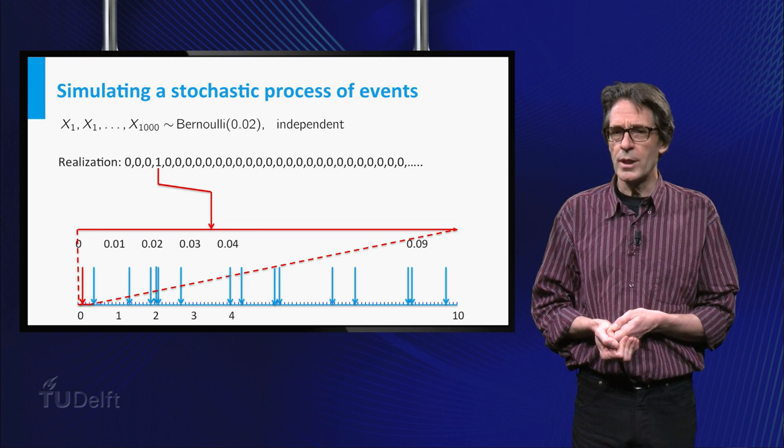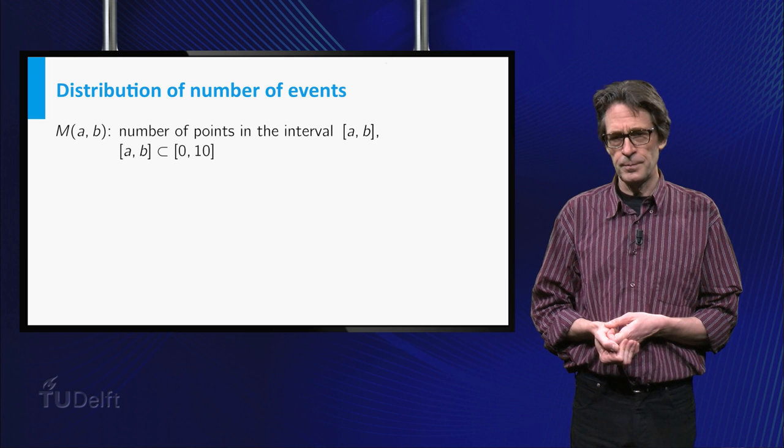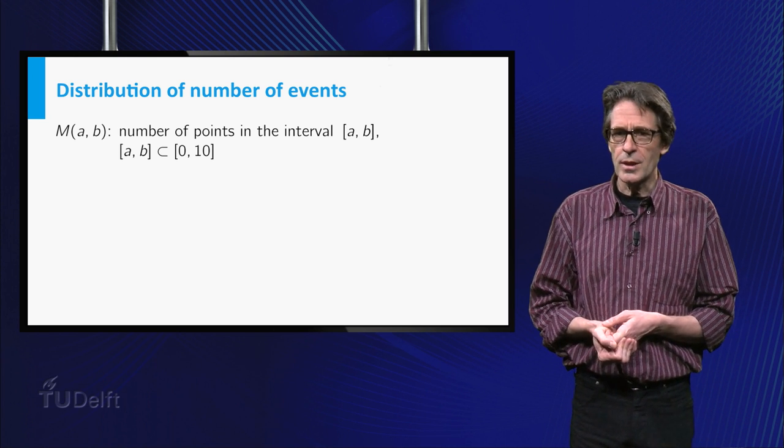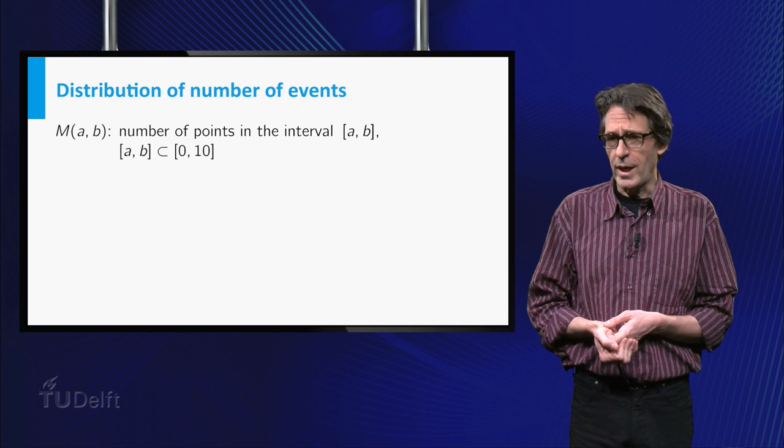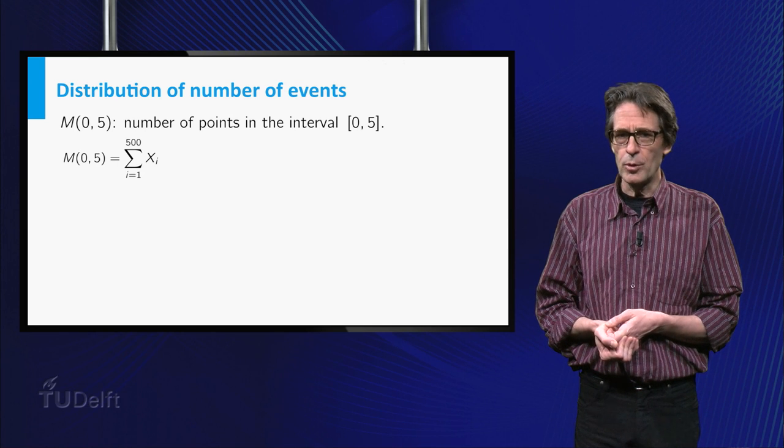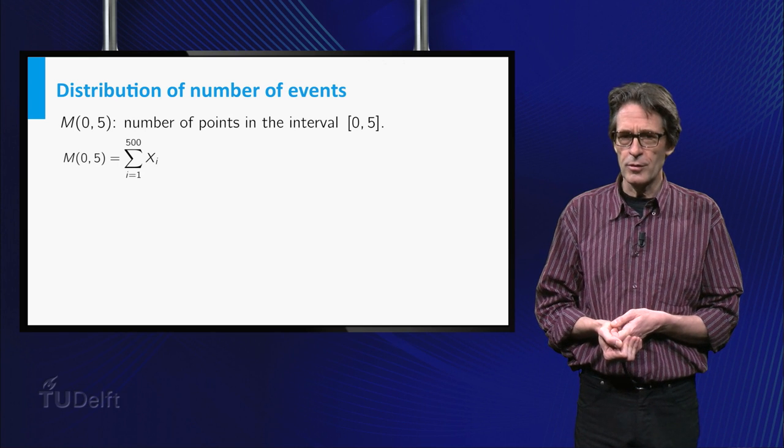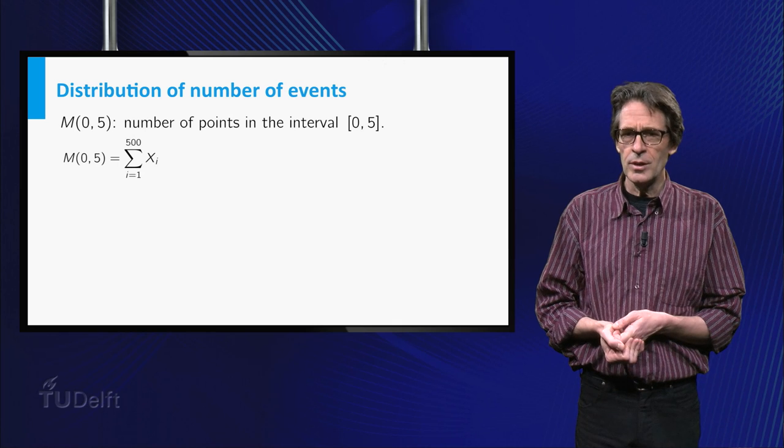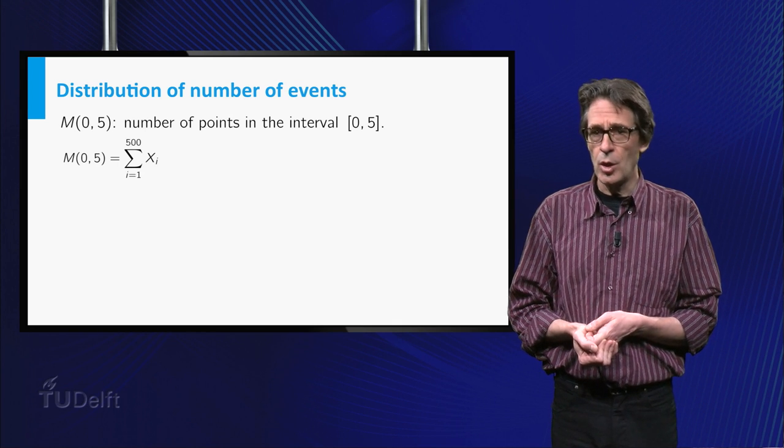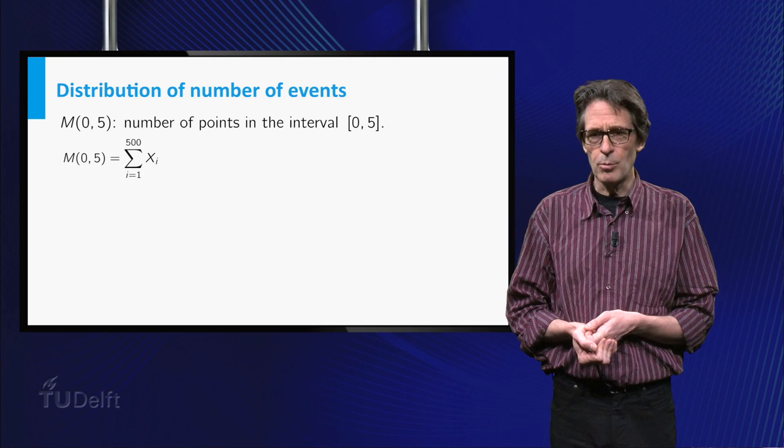Let us take a closer look at the process we have just created. We denote by M(a,b) the function that counts the number of events, or arrows, between time a and time b. So M(0,5) is the number of arrows in the interval (0,5). And this is in fact the sum of 500 independent Bernoulli variables, all with parameter 0.02.